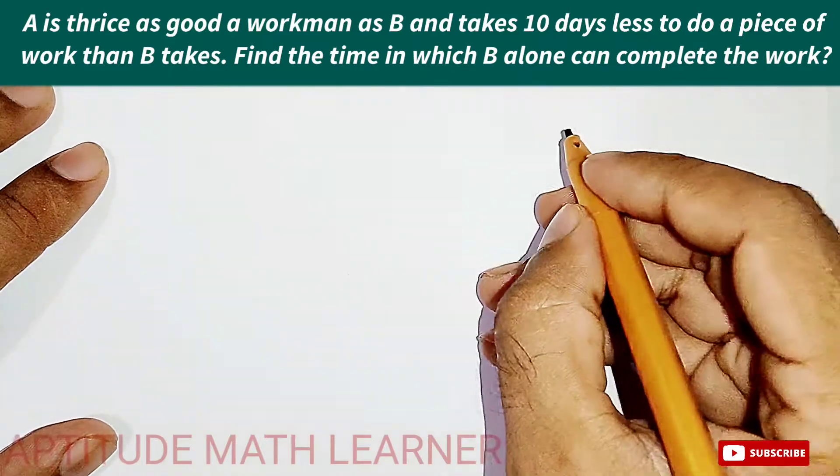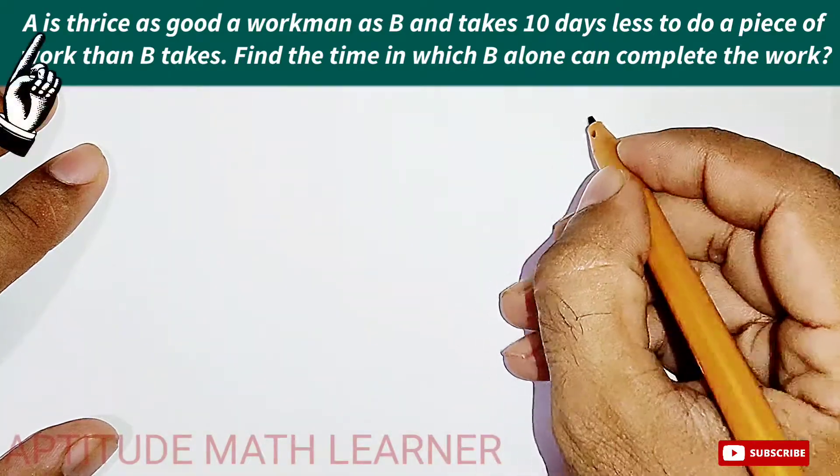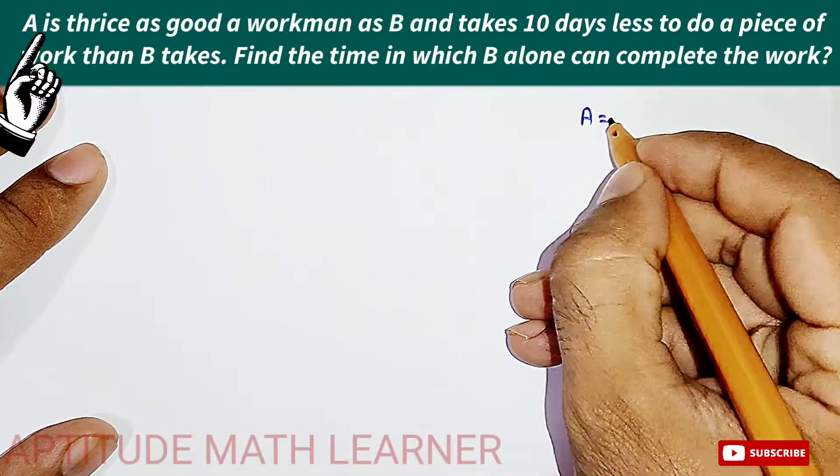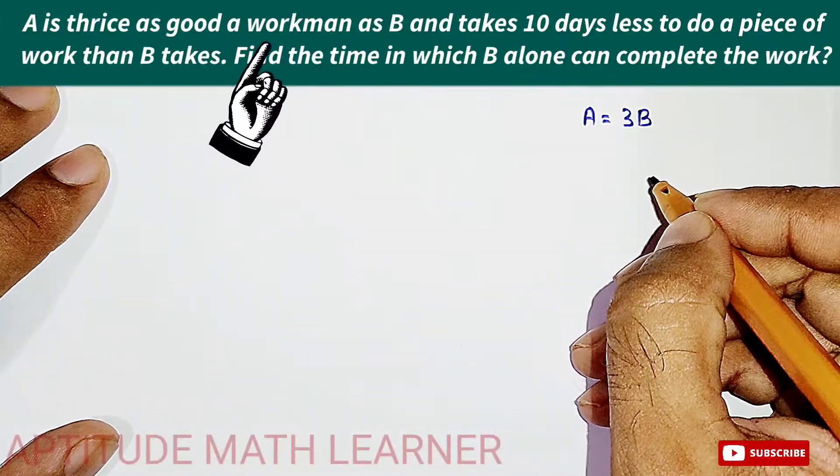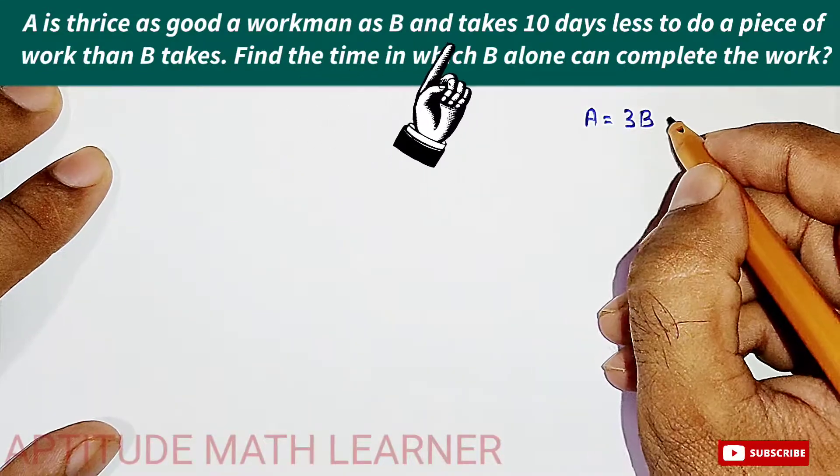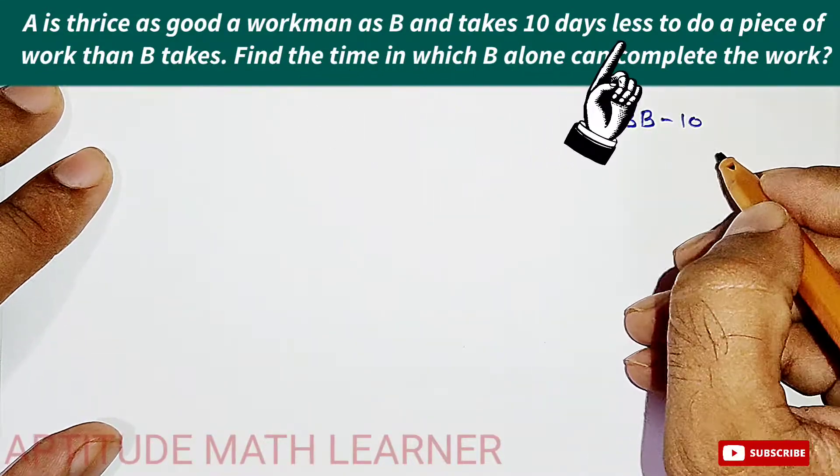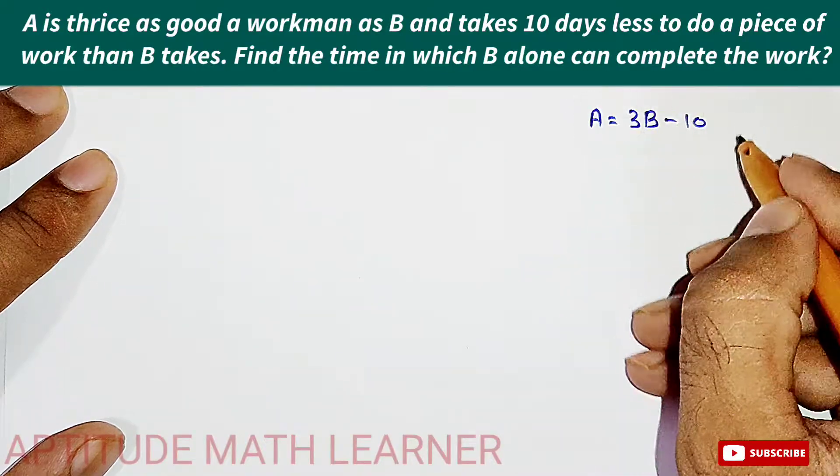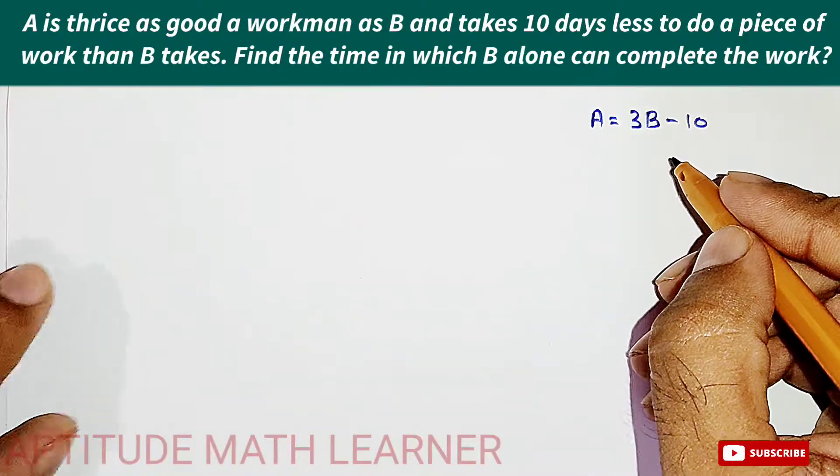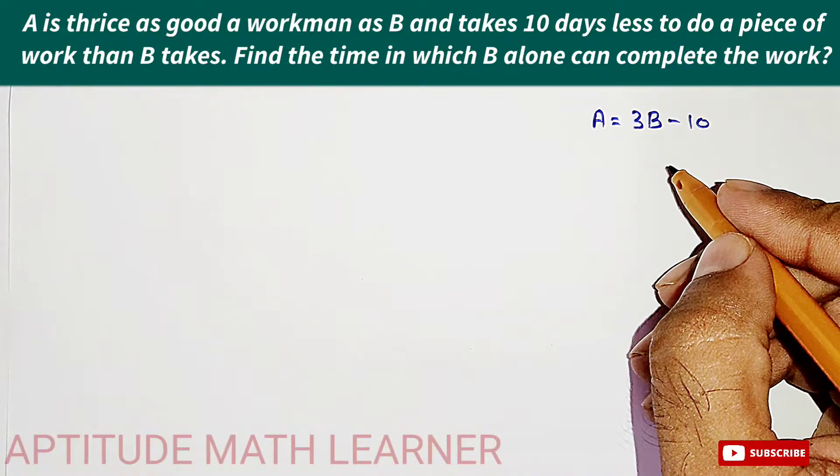It says that A is thrice as efficient as B and takes 10 days less than B. So this is a concept which has been given in the question which is very important.